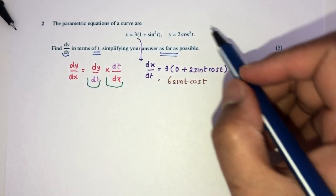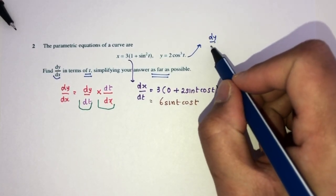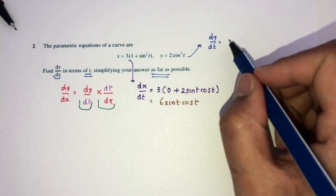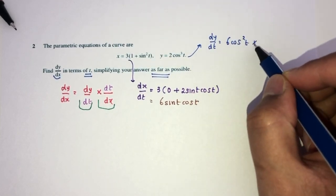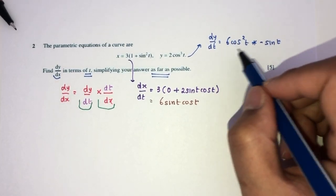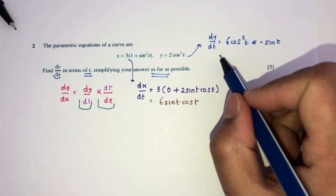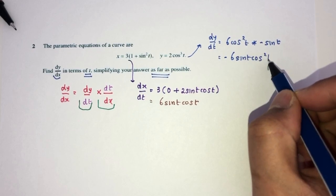The next one, y, will be what? Differentiate dy by dt. First, multiply by the power. It should be 6 cos 2t multiplied by minus sin t. Because if you differentiate cos, it is minus sin. Simplified, it will become minus 6 sin t cos square t.